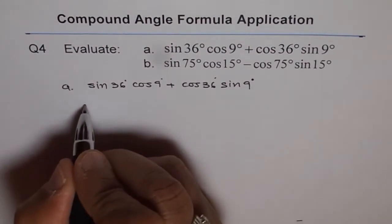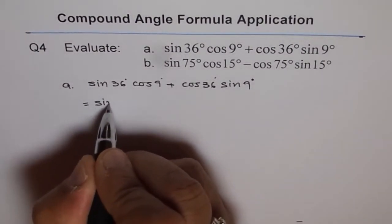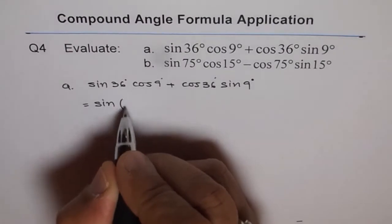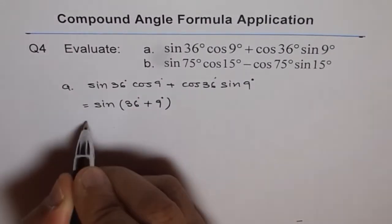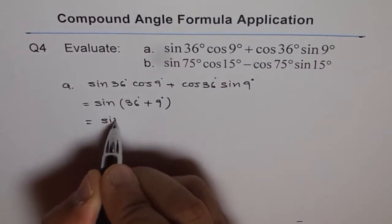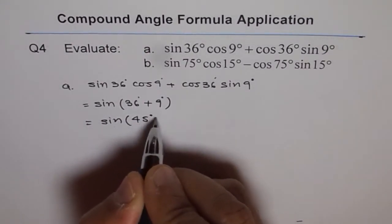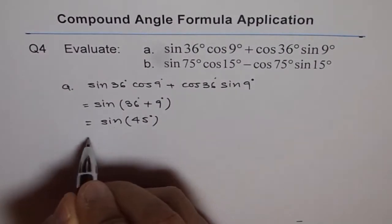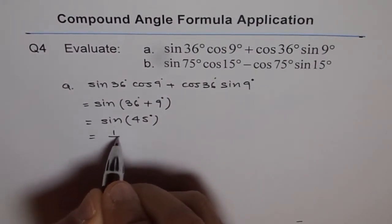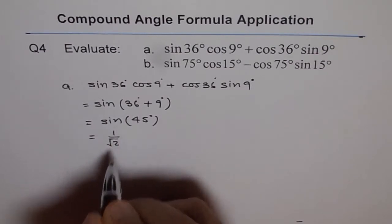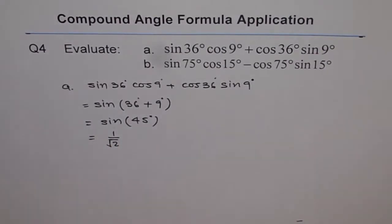Now this is equal to sin of A plus B, which is 36° plus 9°. And that is equal to sin 45°. And what is sin 45°? Sin 45° is 1 over square root 2 using our standard triangles. So that is how we get the solution for this.